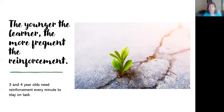The younger the learner, the more frequent the reinforcement. Andy Bondy stressed that three and four year olds need reinforcement every minute to stay on task. Teenagers need reinforcement about once every hour of adult work they're doing. Younger ones need it every half hour or 20 minutes — so you go by the age.